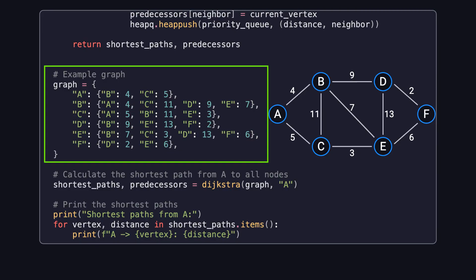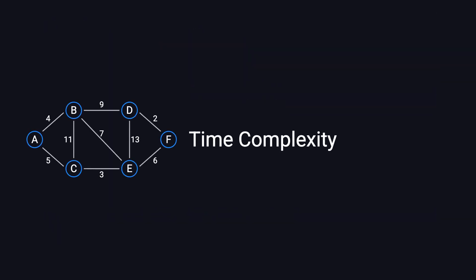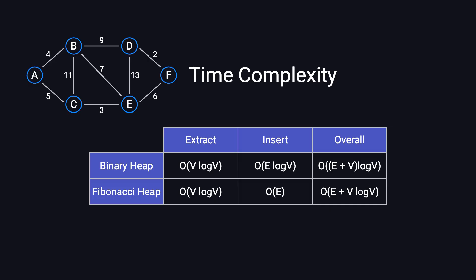This is the adjacency list representation of the graph, corresponding to the example we demonstrated earlier. This method reconstructs the shortest path from the start to the destination by backtracking through the predecessor dictionary. In terms of time complexity, if a binary heap is used, each insertion and extraction takes O(log V). With an optimization for duplicate key updates, also known as the decrease key operation, the algorithm guarantees that each node is extracted only once, resulting in O(V log V). Processing all edges contributes O(E log V), leading to an overall time complexity of O((E + V) log V). If a Fibonacci heap is used, the time complexity improves to O(E + V log V), which is particularly efficient for sparse graphs.